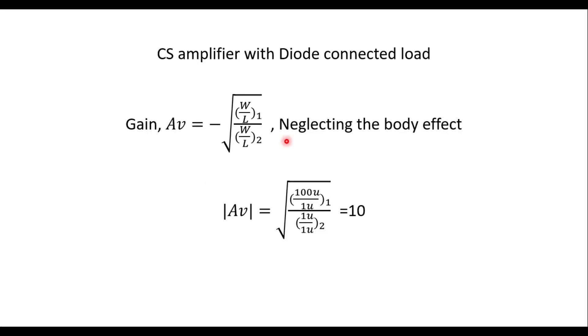If you look into the gain of the CS amplifier with diode connected load, you'll see that the gain is proportional to the square root of (W/L)₁ divided by (W/L)₂. So it's a ratio of the aspect ratios that determines the gain of the amplifier, and this is obviously neglecting the body effect.